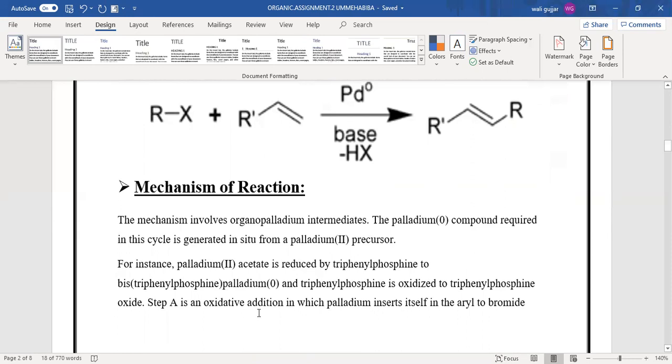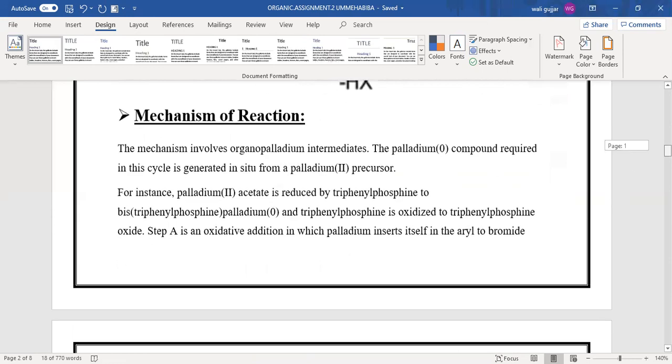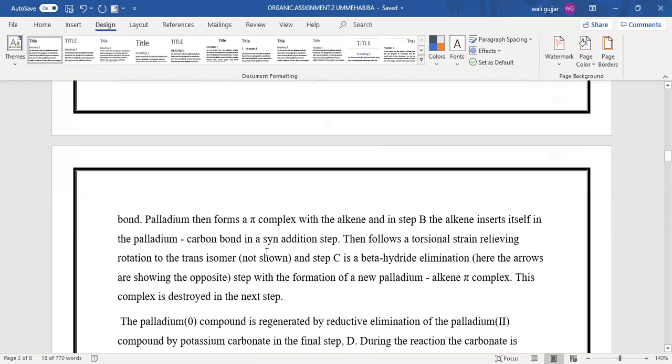In step A, it is an oxidative addition in which palladium inserts itself in the aryl-bromide bond. Palladium then forms a pi-complex with the alkene, and in step B, or the second step, the alkene inserts itself in the palladium-carbon bond in an addition step.